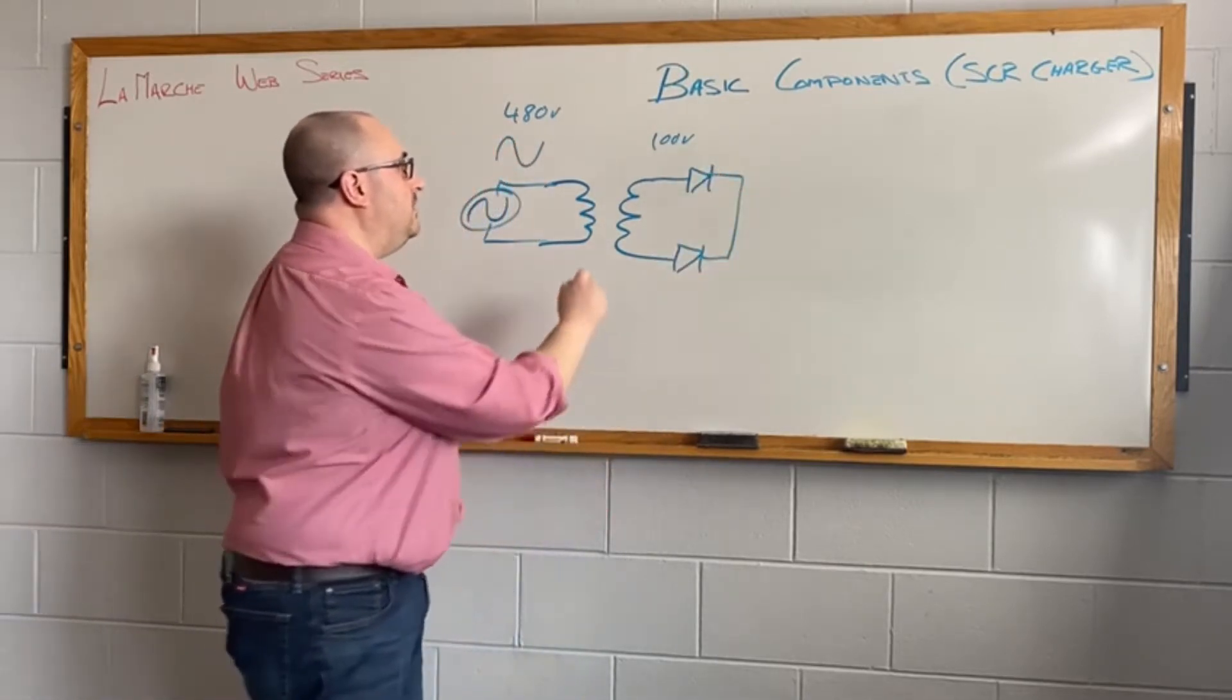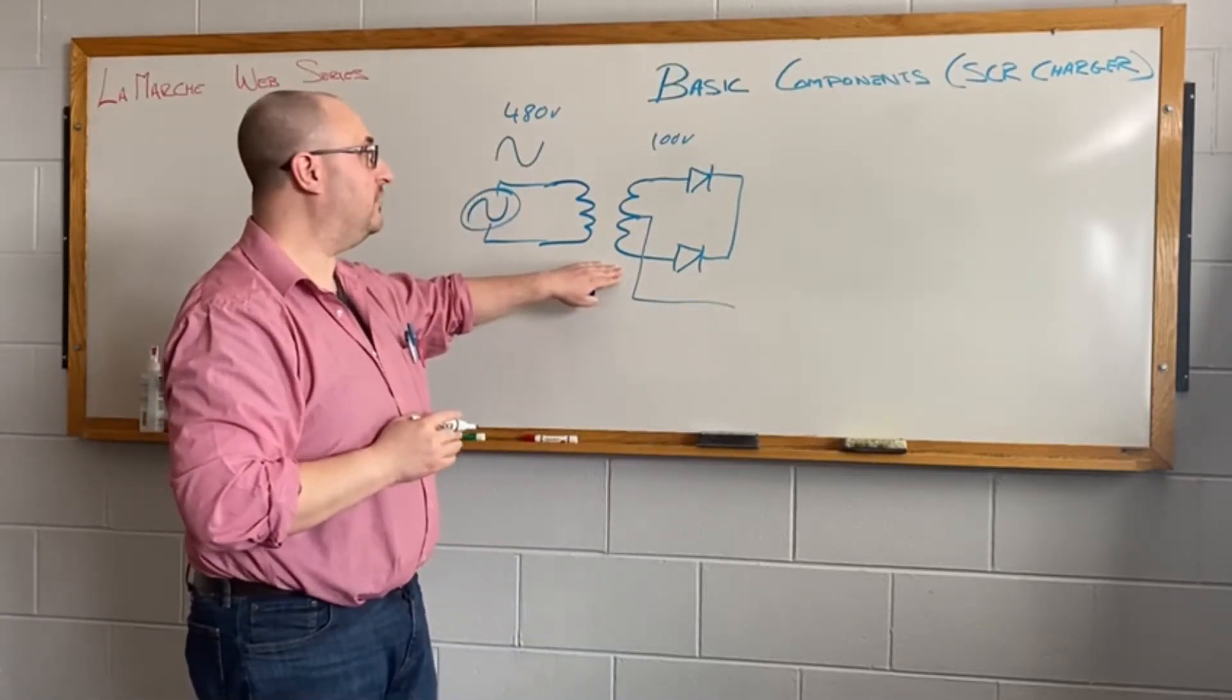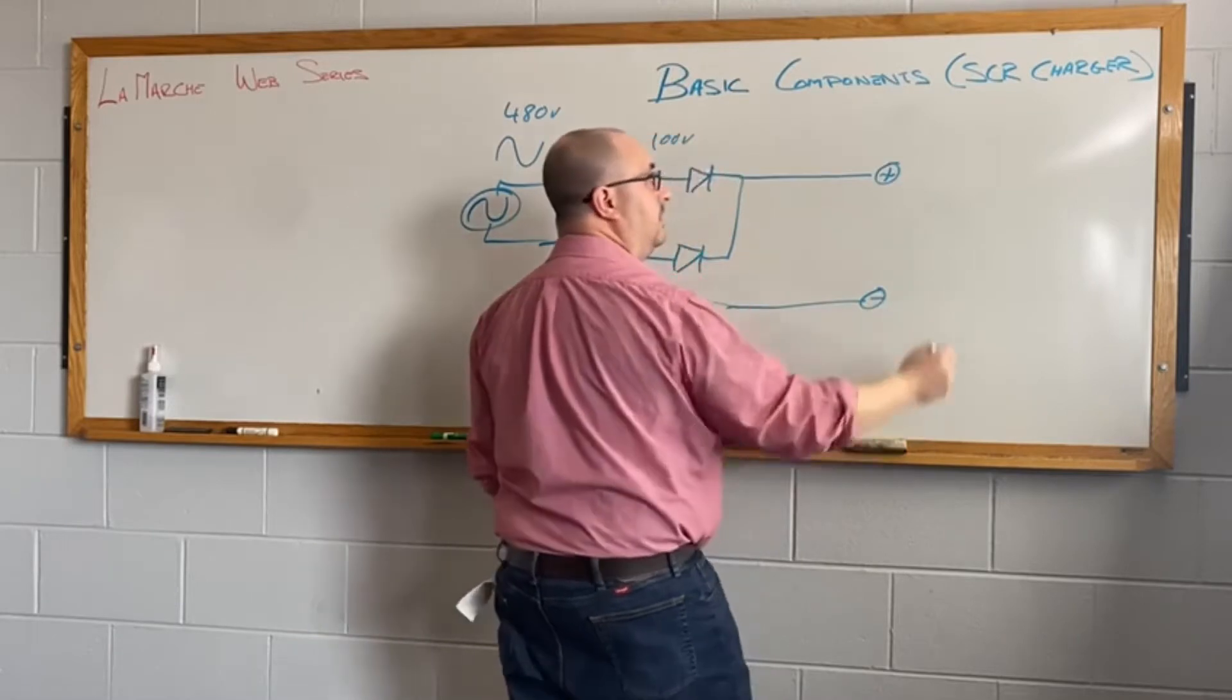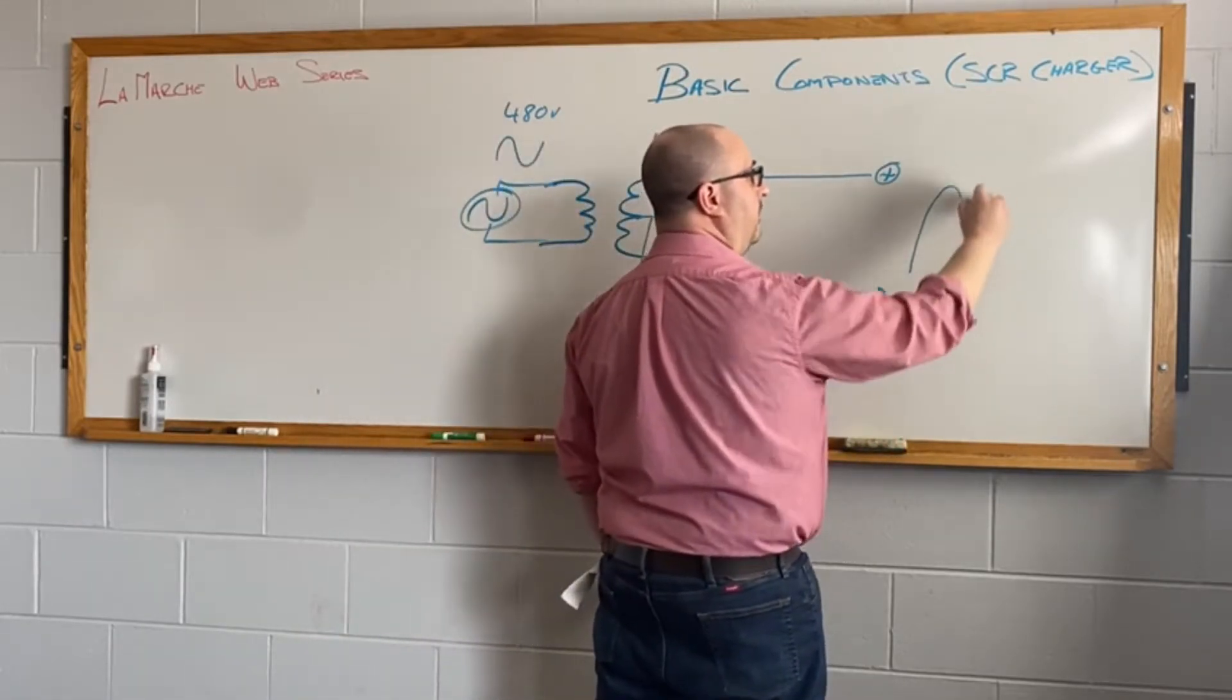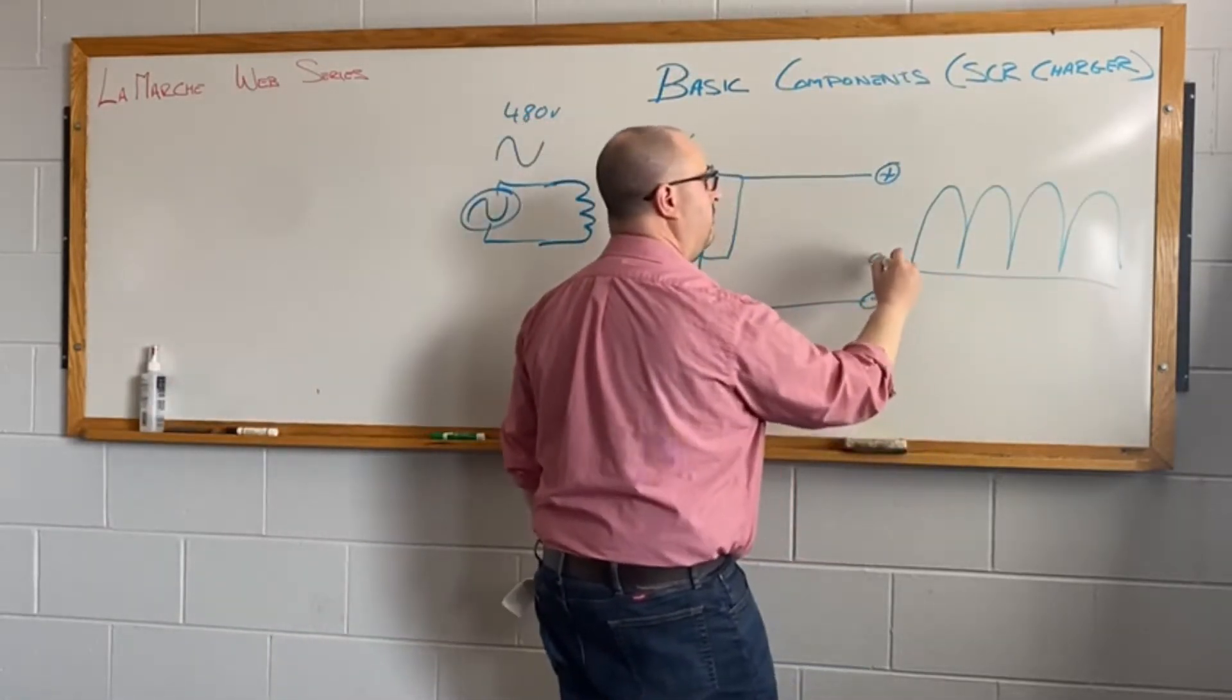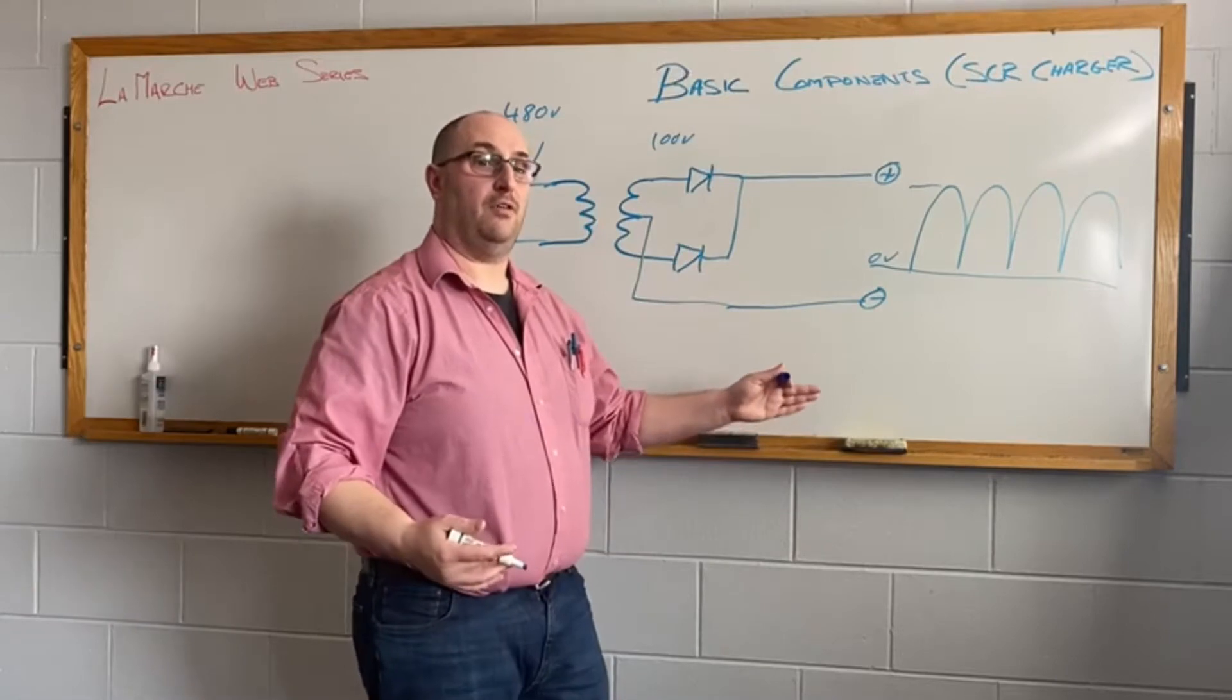So we need to be able to rectify this, and to simplify it, I'm just going to draw a center tap style rectifier. From this, you can get a plus and minus, and the resulting output waveform would be DC. But you notice that there's a high amount of ripple on this and this is not really a healthy thing for the battery.